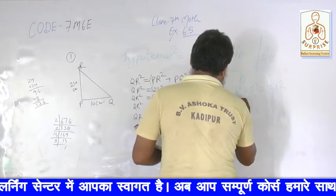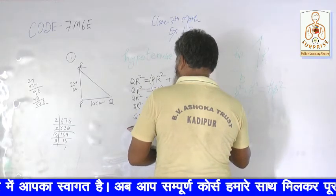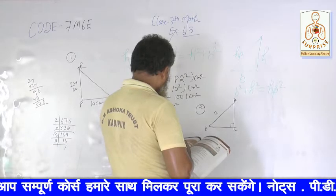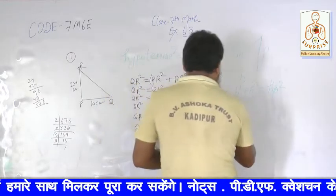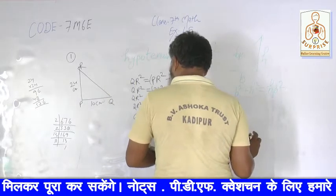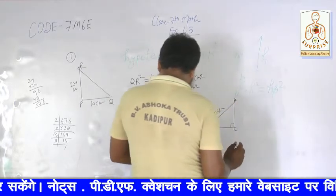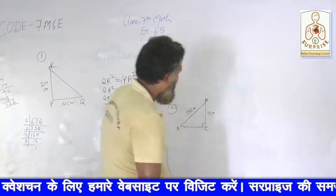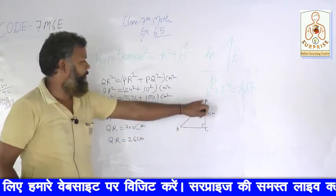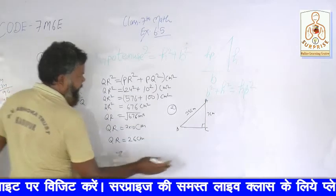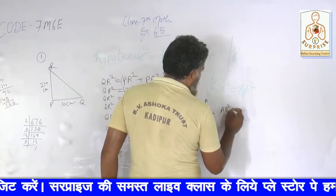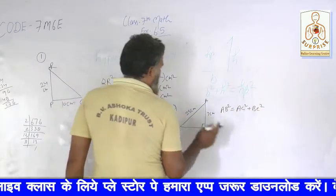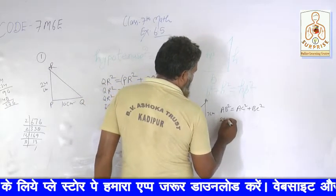Right angle 90 degree wala C hai. AB is equal to 25 cm. Aur AC is equal to 7 cm diya gaya hai. Ab aap sab samajh gaye honge — humein karna hai: AB square is equal to AC square plus BC square.